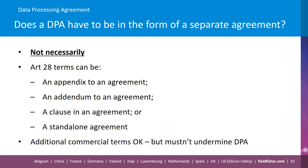Does a DPA have to be in the form of a separate agreement? Not necessarily. These Article 28 required terms could be an appendix, an addendum, part of the agreement, a separate agreement, etc. It is quite permissible to have additional commercial terms between the parties as long as the terms of these other agreements don't actually undermine the required Article 28 terms.